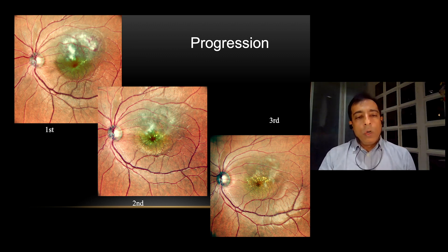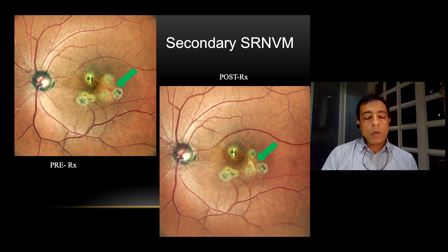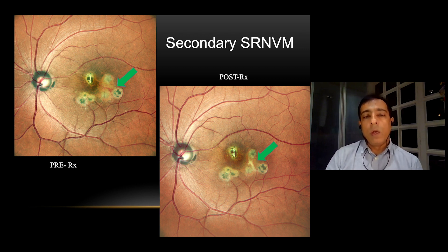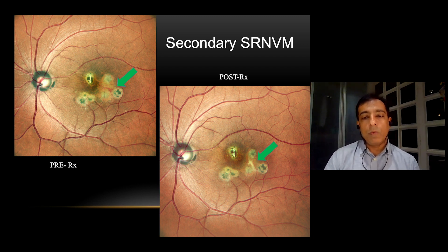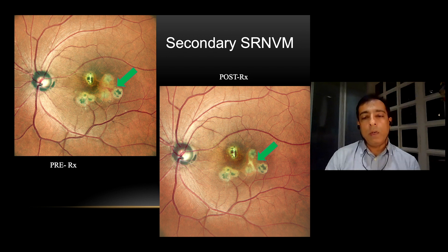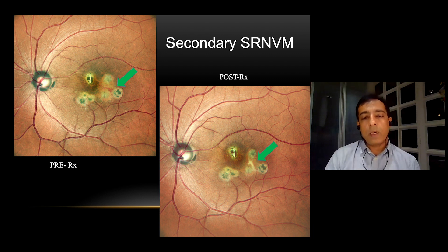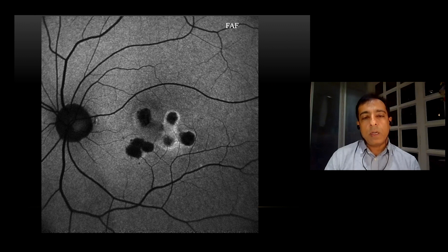This is a case of old chorioretinitis, possibly toxoplasma. The patient came to us with a recent drop in vision. On the left image, you can see that between the two lesions there is a reddish hue pointed by the arrow — that's probably a secondary SRNVM which came up and reduced the vision. We gave antivirals to the patient. On the right image, you can see that streak of blood has gone away and the lesion has regressed. It is seen very beautifully on the autofluorescent image how those two lesions connect with that regressed SRNVM which it formed.